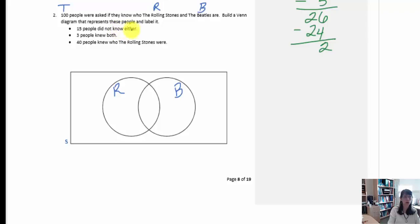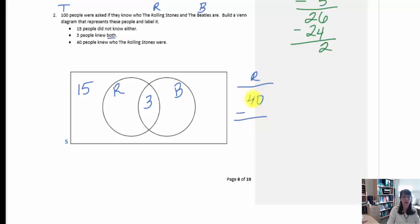The first piece of information says 15 people did not know either group, so those 15 go out in the universe outside both circles. Next, three people knew both, so the word 'both' is a clue that three must be the intersection. Then 40 people knew who the Rolling Stones were — subtracting the three already accounted for leaves 37 more. So thirty-seven plus three makes 40 total for Rolling Stones.